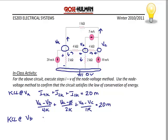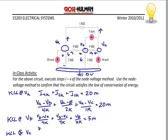Now KCL at VB: assuming current is leaving, I have (VB minus VA) over 4K for the left 4K resistor, plus (VB minus VC) over 4K for the right 4K resistor, plus VB over 2K for the bottom resistor, and the current coming into that node is equal to 5 milliamps. Then KCL at VC: the current through the 4K is (VC minus VB) over 4K, the current through the 1K is (VC minus VA) over 1K, plus 5 milliamps going out equals 10 milliamps coming in.